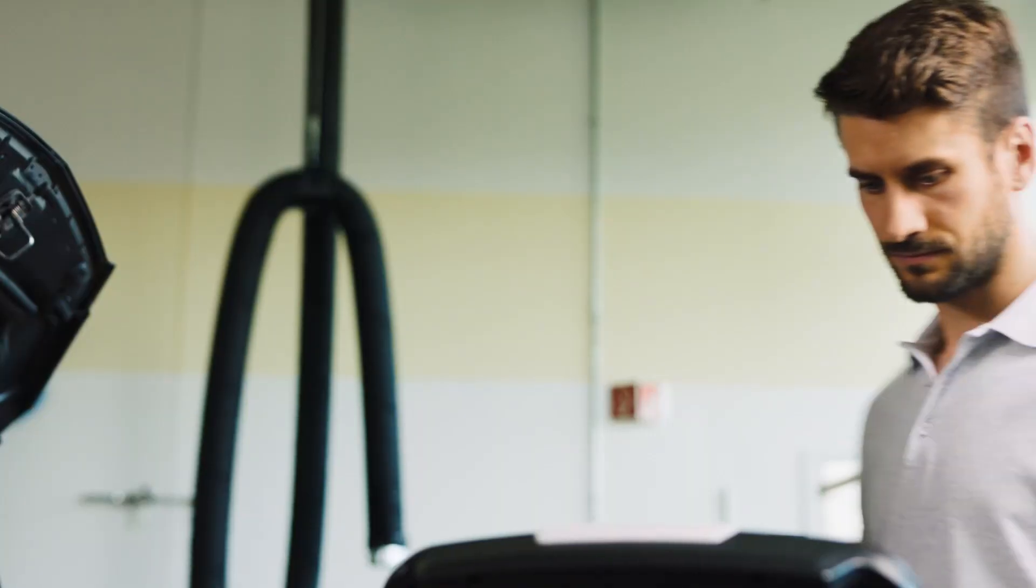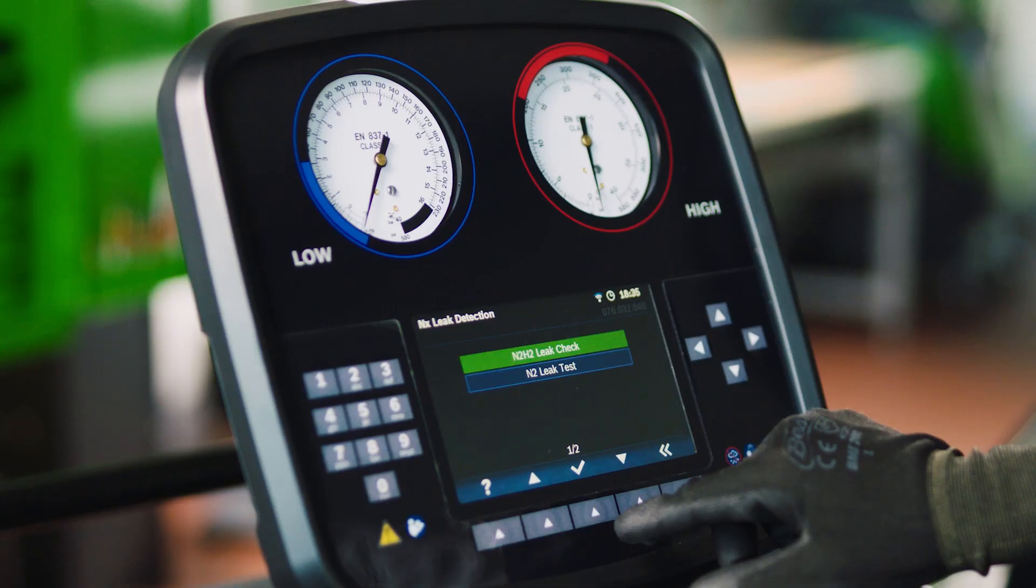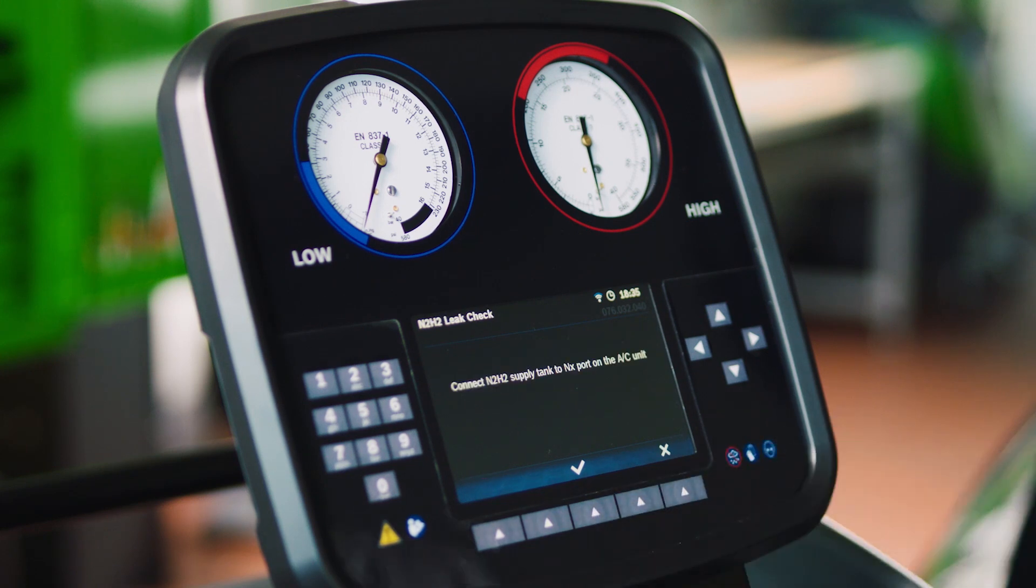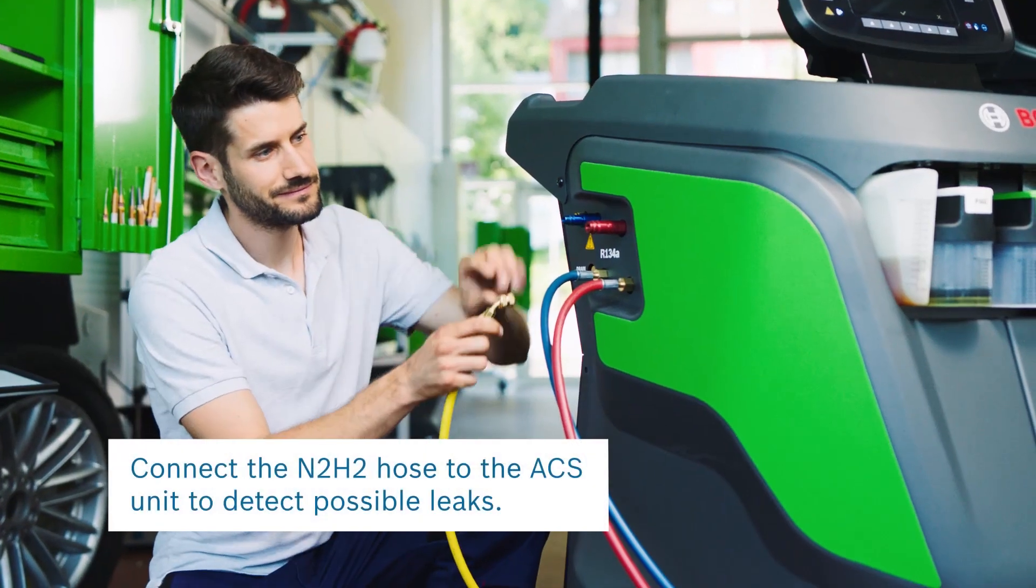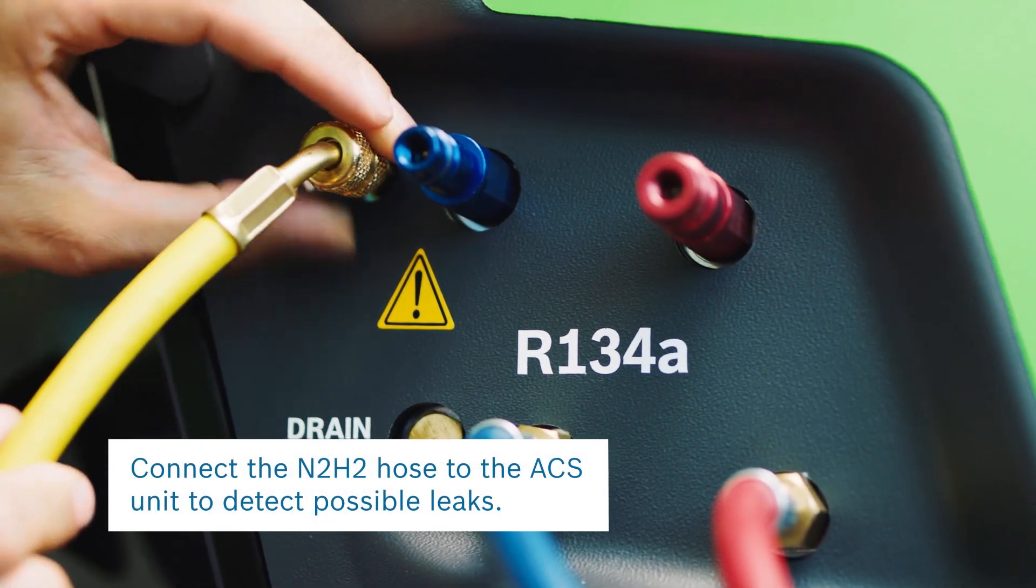Remove the nitrogen supply tank and use the user interface to start the N2H2 leak check. Connect the yellow hose to the NX port and adjust the pressure as displayed in the help message.